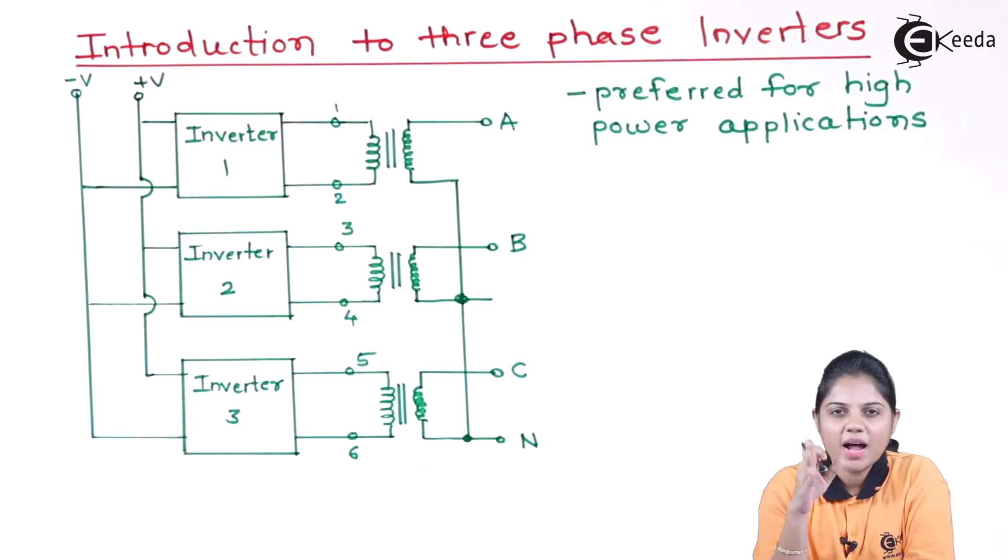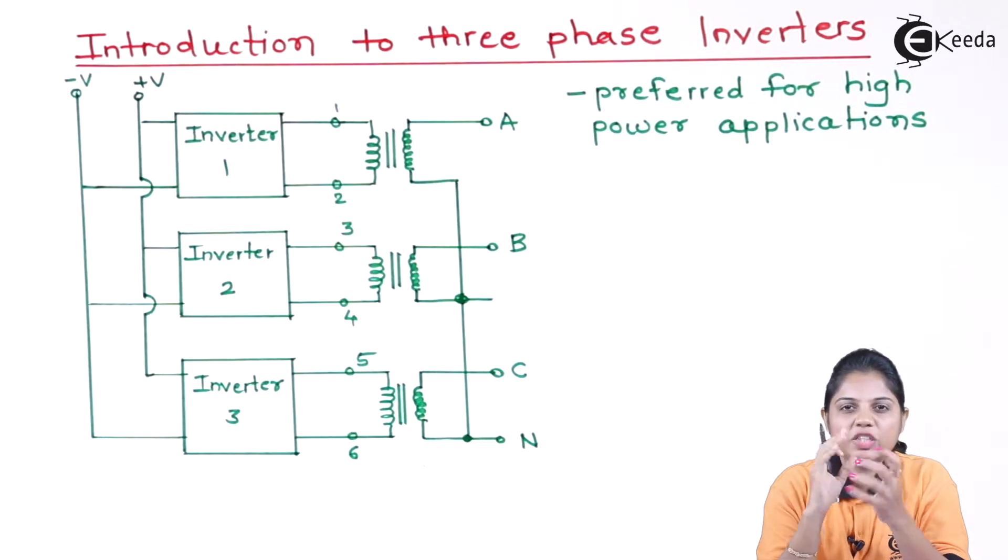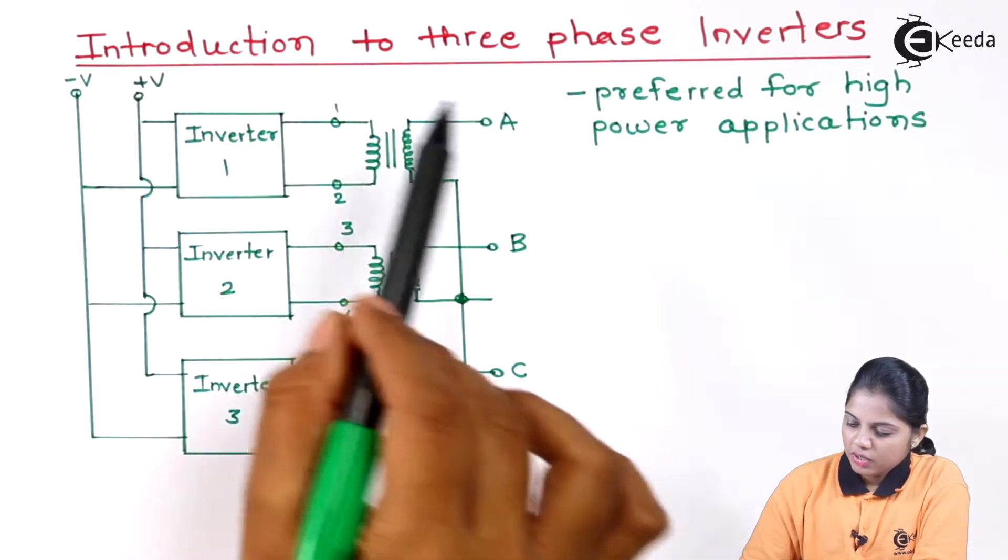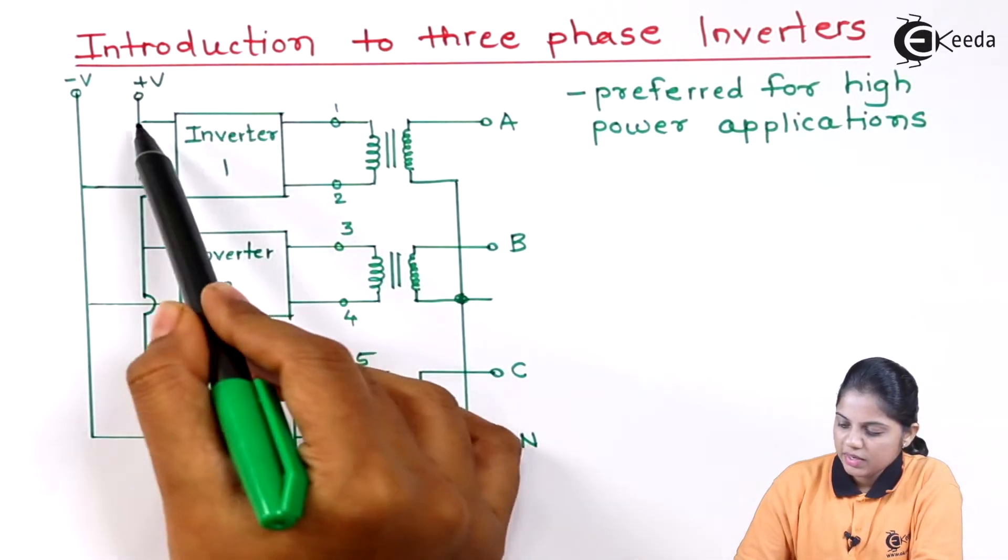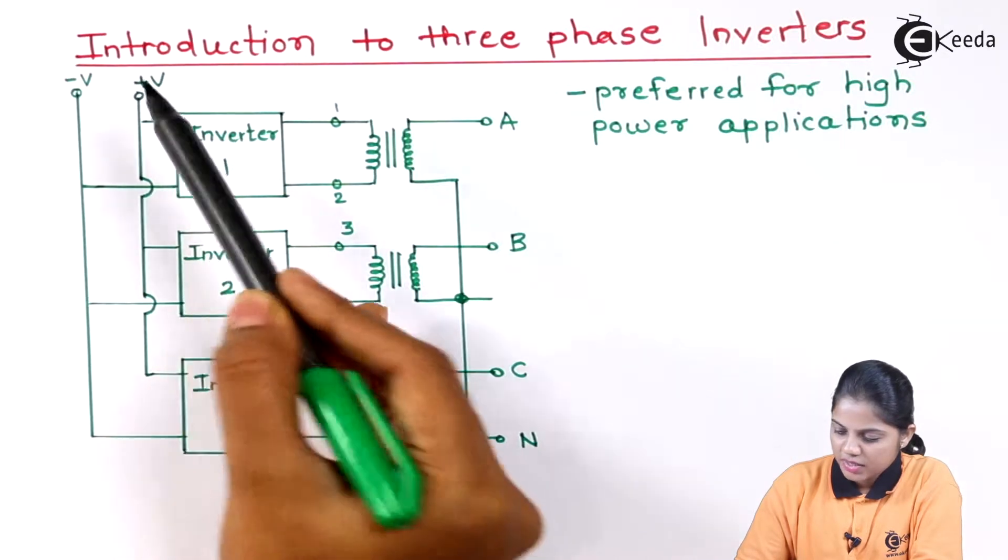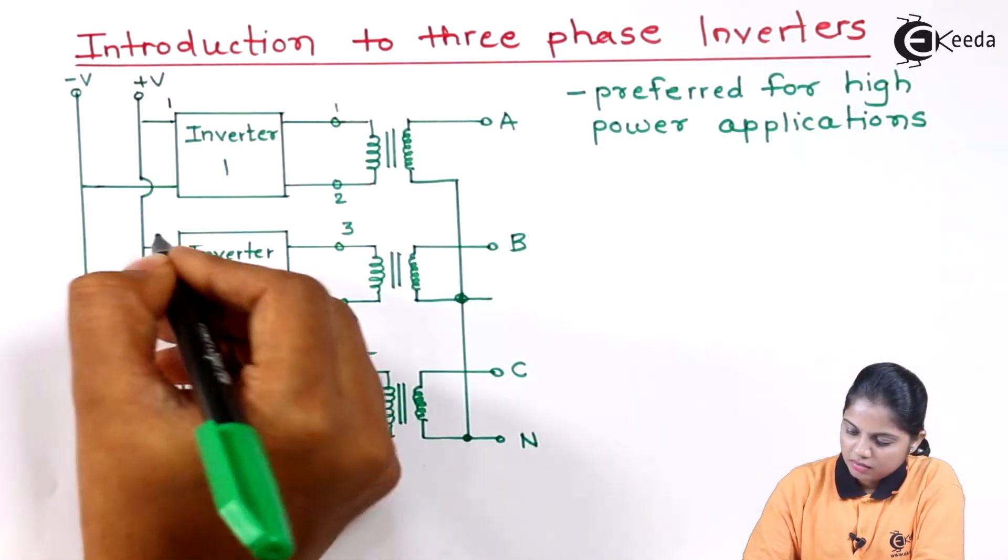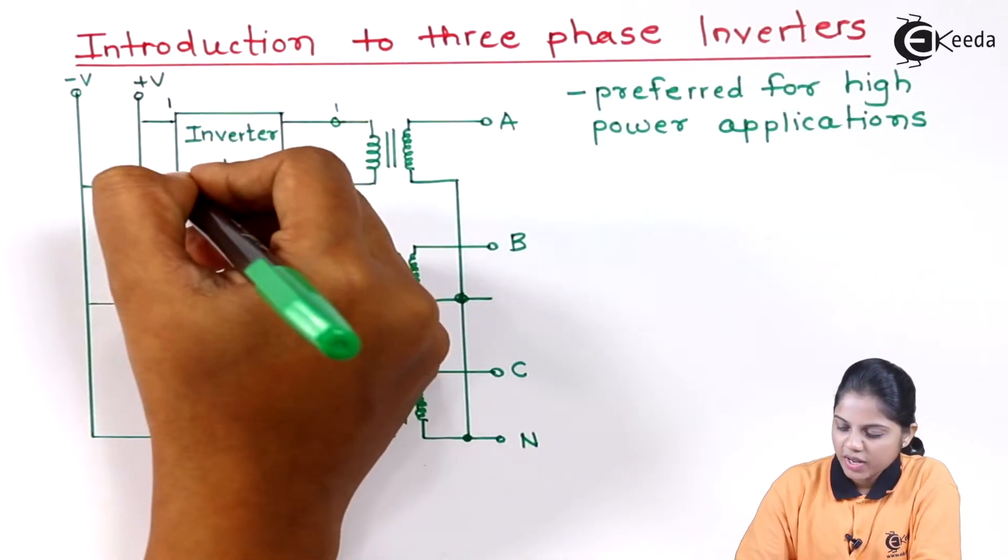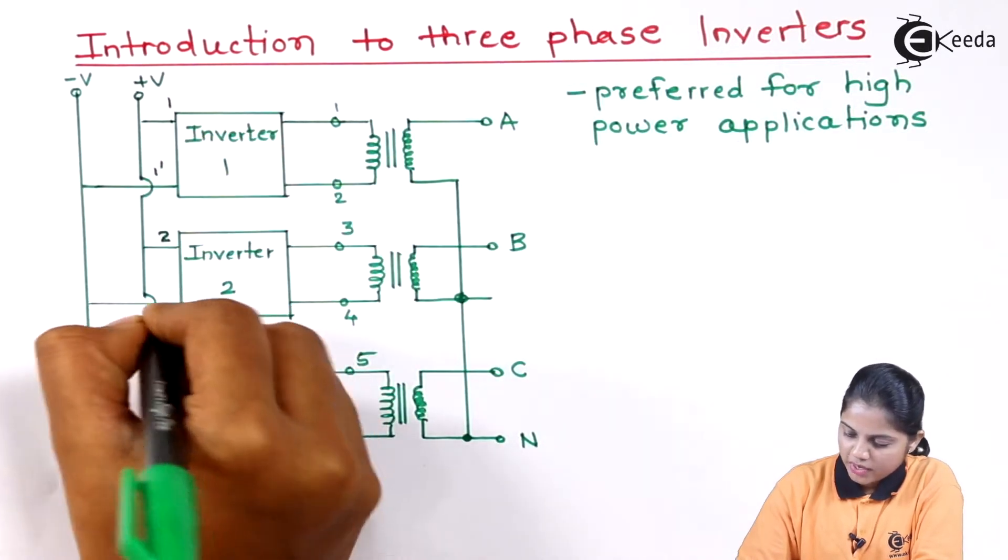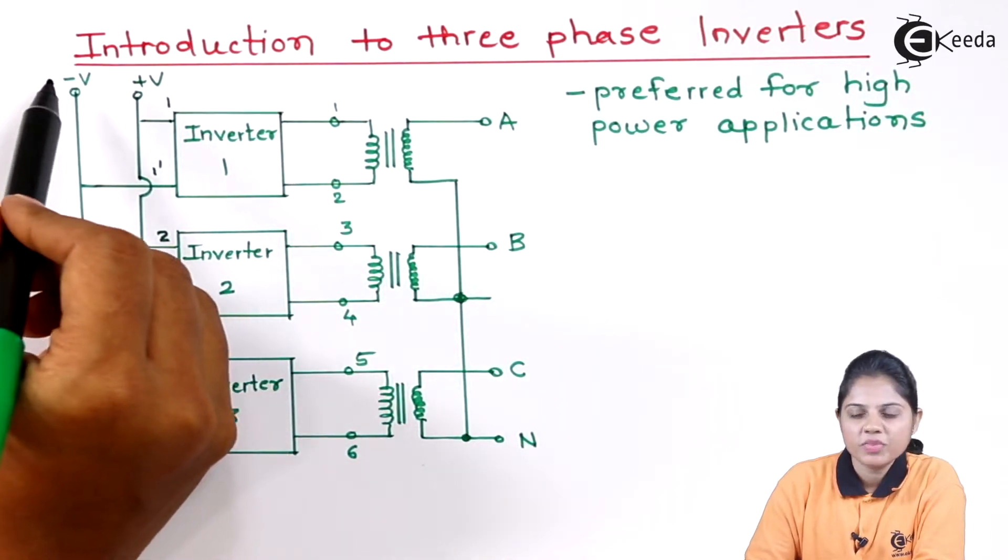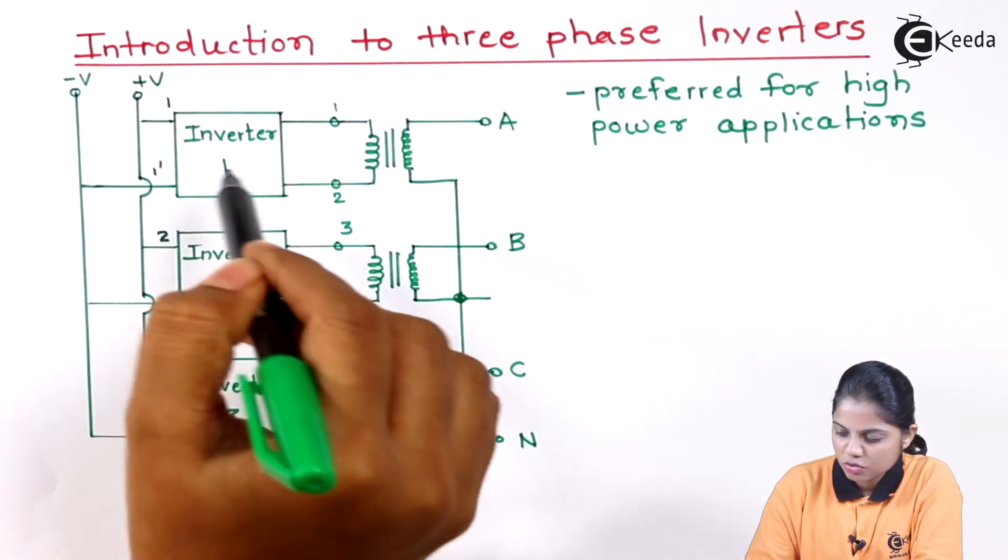This three-phase, whenever there is a high power application required or different phase application is required, that time we should connect the device with three-phase supply. So if you look carefully at this diagram, here you can see the input of the inverters are connected to positive and negative of the DC source.